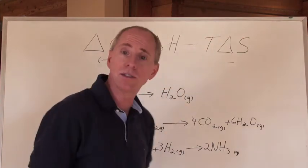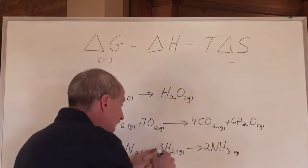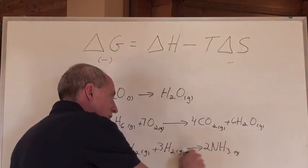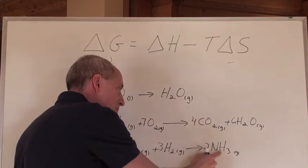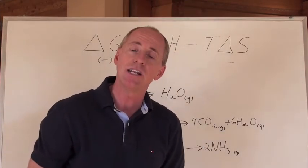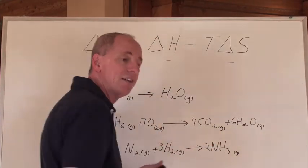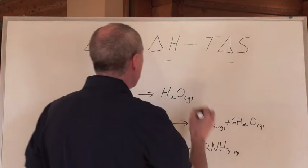But this reaction, if you look it up in your data booklet, because the heat of formation of NH3 is what this reaction is. Remember? The elements making a compound. You can look up the heat of formation, the delta H, and that delta H is negative, because it's negative for this reaction, about negative 92 kilojoules. So it's negative.